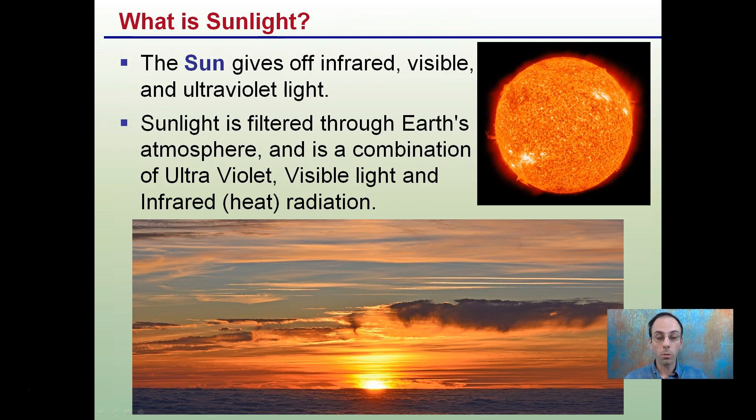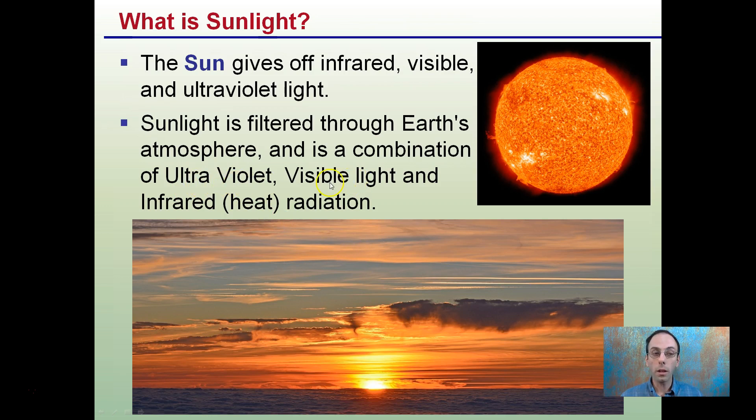So this brings the question, well, what's sunlight? Sun gives off infrared, visible, and ultraviolet light. Sun is filtered through the Earth's atmosphere and is a combination of that ultraviolet or UV light, visible light, and also infrared radiation, which we interpret as heat. So sunlight has a wide variety of things, more than just what we visibly can see.